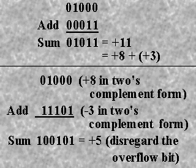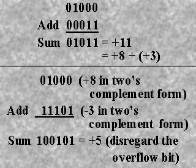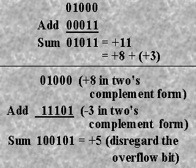The topic for this lesson is addition and subtraction in the 2's complement system. Subtraction may be performed by representing both A and minus B in the 2's complement form and adding. In order to perform addition or subtraction of numbers in the 2's complement system, it is necessary that all numbers being added or subtracted have the same number of bits.